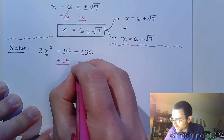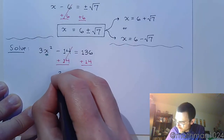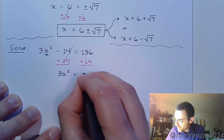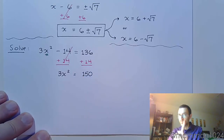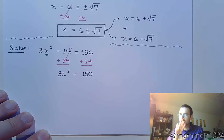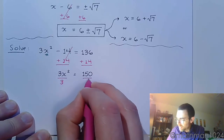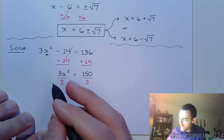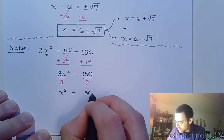Adding 14 to both sides gives 3x² = 150. Be careful — do not use the square root property yet, because you don't have the square by itself. If most students try to use the property here they end up making a very fatal mistake. Finish getting x squared by itself by dividing both sides by 3, giving x² = 50.